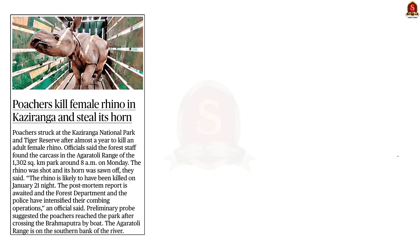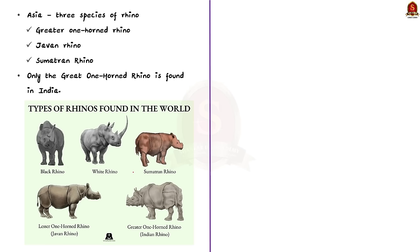Look at this news article. It talks about a recent incident where poachers have killed an adult female rhino and stolen its horn. The body of the rhino was found in Kaziranga National Park. This incident has raised concerns because it is the first time it has happened in the past one year, since many conservation efforts were taken last year to prohibit poaching. The revival of this practice has created concerns regarding the conservation of rhinos. In this context, let us quickly go through rhinos from a prelims exam perspective.